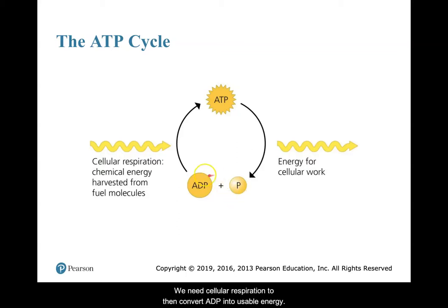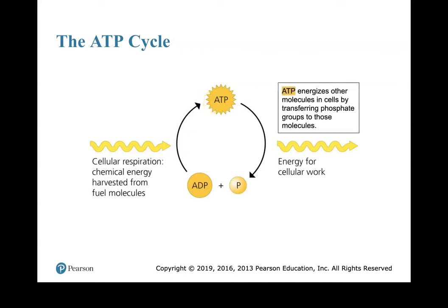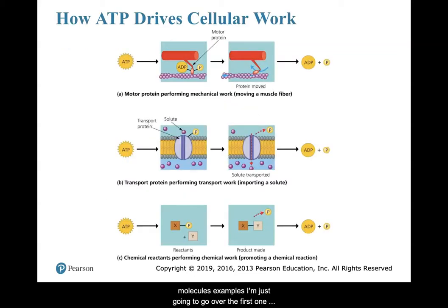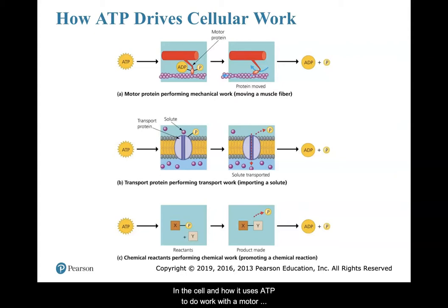We need cellular respiration to then convert ADP into usable ATP energy. So once again, ATP energizes other molecules in the cell by actually transferring a phosphate group to those molecules. Let me give you some examples — there are many different examples in the cell of how it uses ATP to do work.